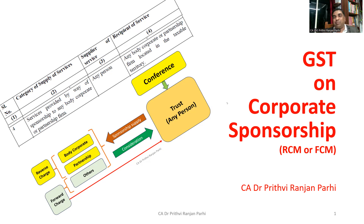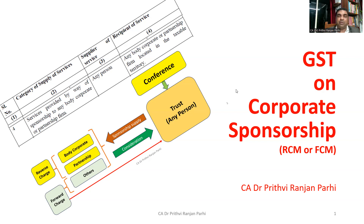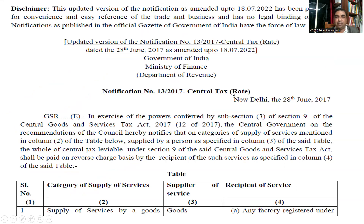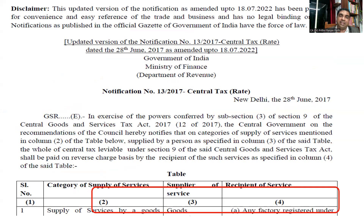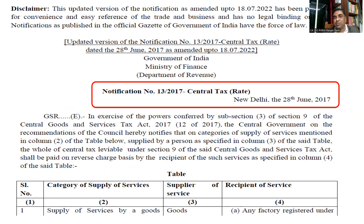Our entire discussion will be on whether GST has to be paid under RCM — if it is RCM, that means the recipient of supply or the recipient of service has to pay GST, and you can pay GST and take ITC also. If you are talking about FCM, this means the person who is providing the service, that means the supplier, has to pay GST. Please refer to notification number 13/2017, which is issued on 28th June 2017.